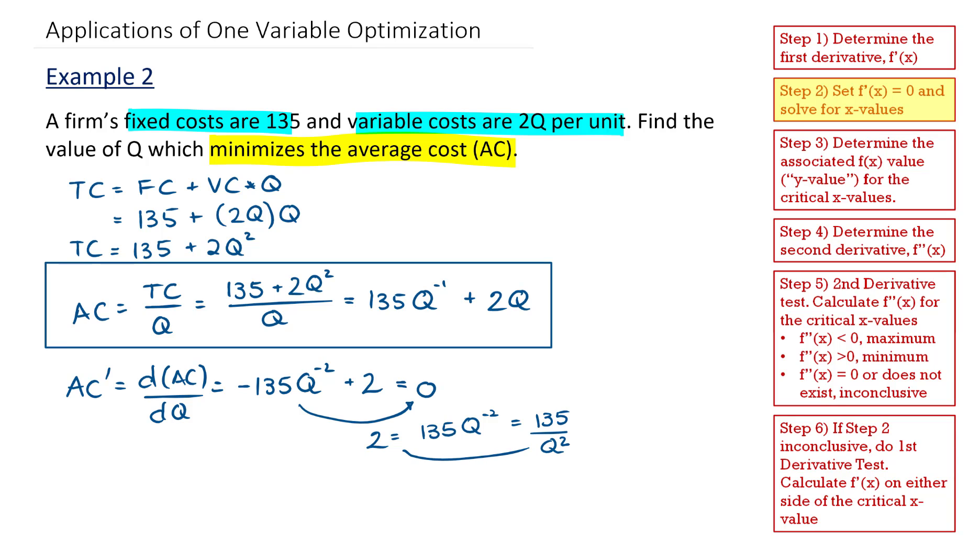So to move this denominator back up, I'm going to multiply both sides by Q squared. I get 2Q squared is equal to 135. Q is going to be equal to 135 divided by 2.